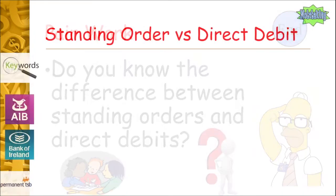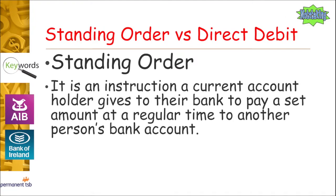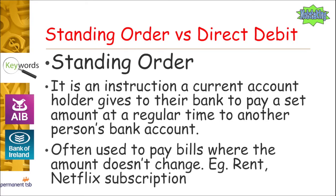A standing order is for a current account holder and it's a transfer of money from your bank account to another bank account. The key thing about a standing order is that the exact same amount comes out of your account each time, and the time period doesn't change. For example, paying your rent or your Netflix subscription — in both cases the amount doesn't change. If your Netflix subscription is €10 a month, it's €10 every time.